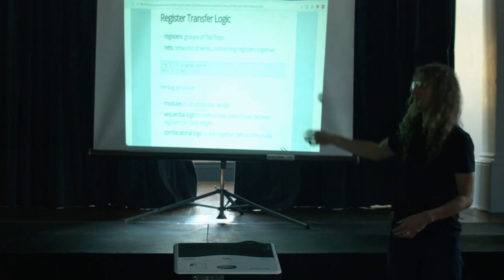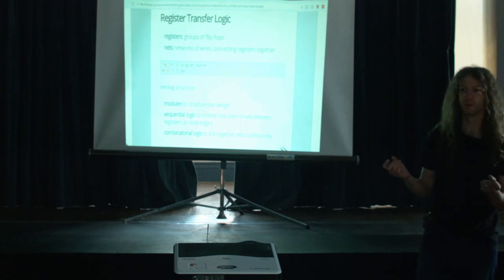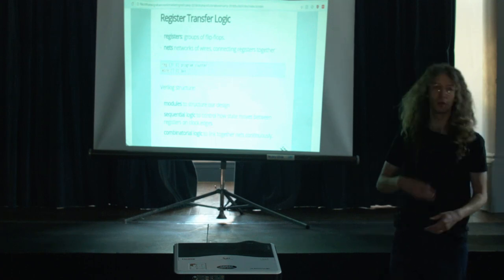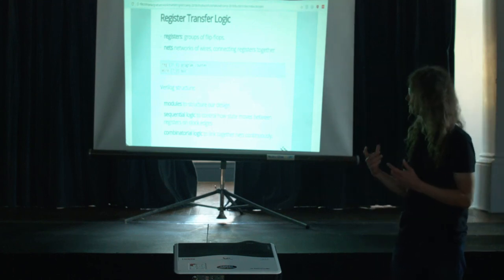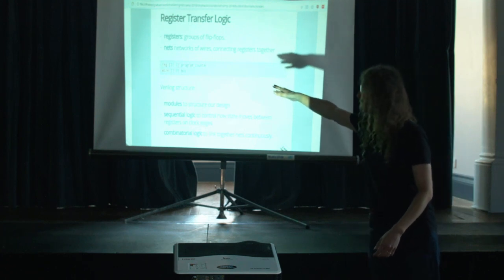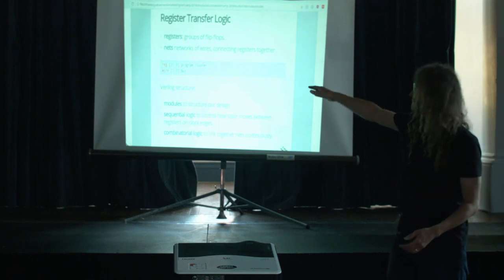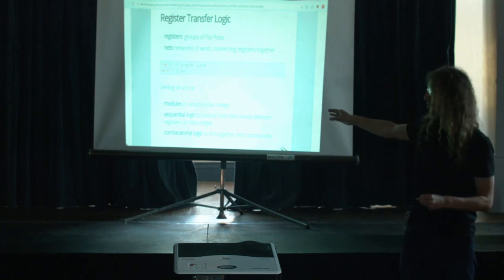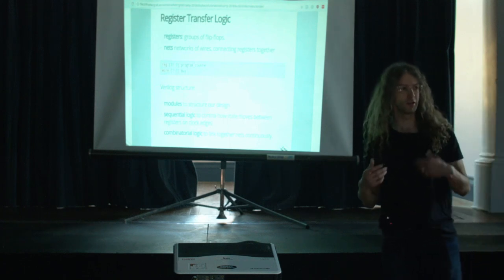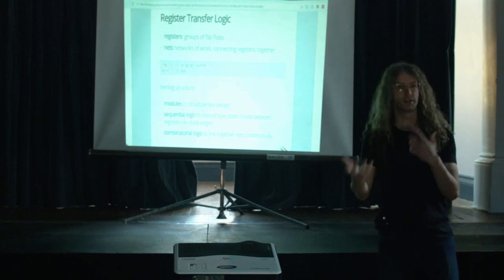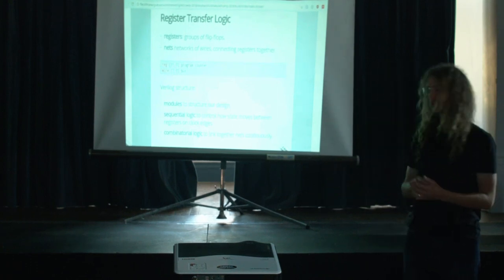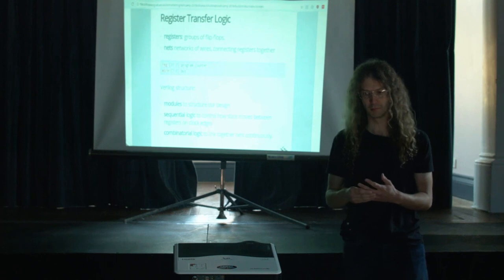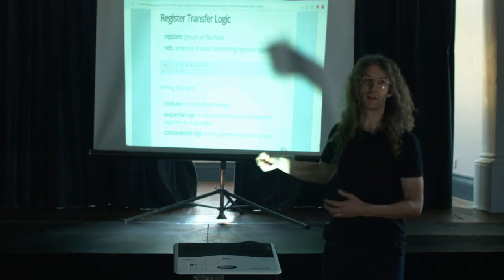In Verilog, things are grouped together. You make registers by grouping flip-flops — a group of eight flip-flops might be represented by an 8-bit register. You can also connect registers and other things together using networks of wires. The Verilog declaration looks something like this: a 32-bit register and an 8-bit network of wires. The structure in Verilog around these things consists of three things: modules to abstract functionality into reusable components, and inside the modules, the sequential and combinatorial logic to provide their implementation.